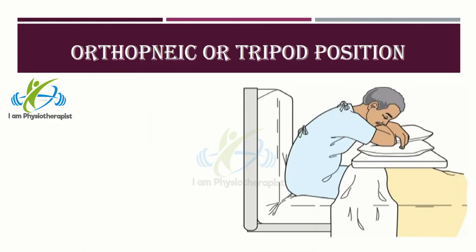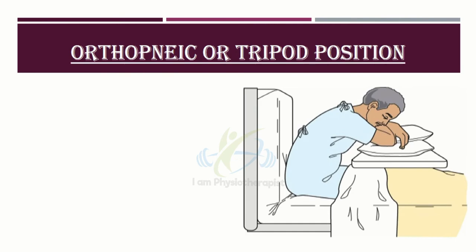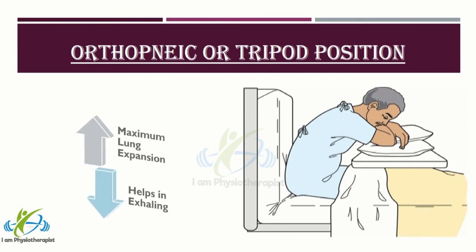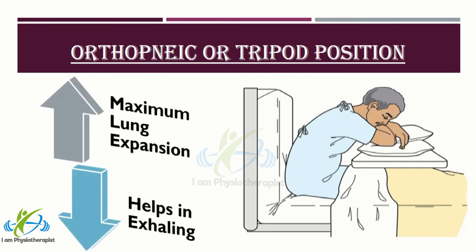Orthopneic or tripod position places the patient in a sitting position, or on the side of the bed, with an overbed table in front to lean on, and several pillows on the table to rest on. This position promotes maximum lung expansion for patients who are having difficulty breathing. It is particularly helpful to patients who have problems in exhaling, because they can press the lower part of the chest against the edge of the overbed table.